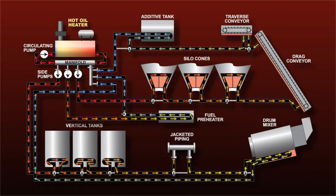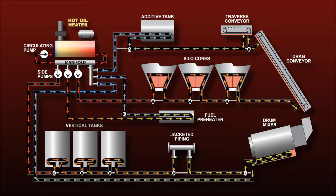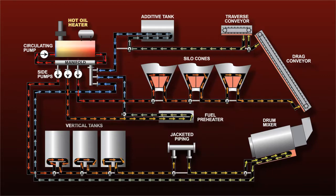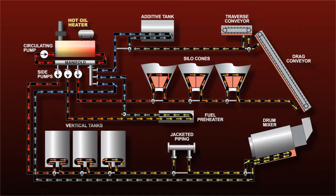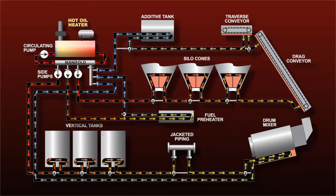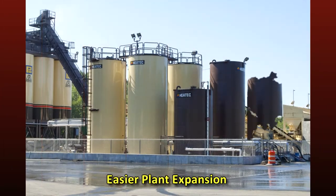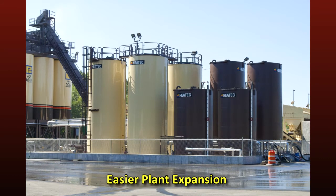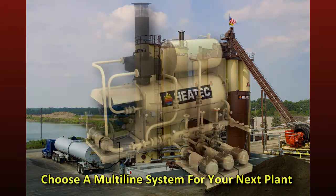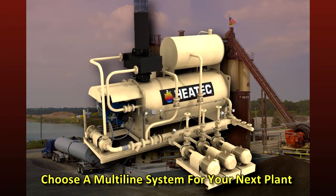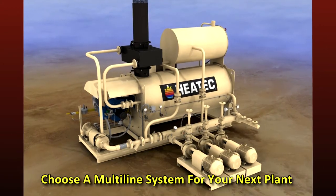The major benefit of multiple circuits is faster oil flow to all components, noticeably reducing the time to heat the components. Moreover, heater shutdowns are avoided because the circulation pump maintains optimum flow through the heater coil. A multi-line heating system also facilitates adding tanks and other components to an existing hot oil system. We strongly recommend the multi-line system with a manifold heater over a single-line system for most HMA plants.